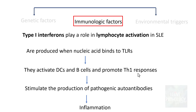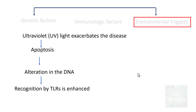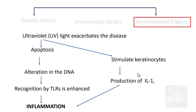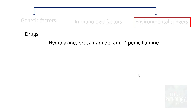The last factor is environmental triggers, which exacerbate the disease — particularly exposure to ultraviolet light. In a genetically susceptible person, UV light damages cells causing apoptosis, and also results in alteration of DNA which is recognized by toll-like receptors, enhancing activation of B cells and dendritic cells and leading to inflammation. Ultraviolet light also stimulates keratinocytes to produce interleukin-1, further causing inflammation. Various drugs are also implicated in SLE, particularly hydralazine, procainamide, and penicillamine.